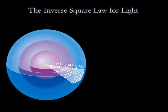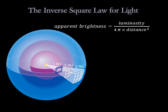Now consider this figure. The same total amount of light must pass through each imaginary sphere surrounding the star. The amount of light passing through the small square on the sphere located at 1 AU is the same amount of light that must pass through 4 squares of the same size on the sphere located at 2 AU. Each square on the sphere at 2 AU therefore receives only a quarter of the light compared to the square on the sphere at 1 AU. Similarly, the same amount of light must also pass through 9 squares on the sphere located at 3 AU. Each of those squares receives only 1/9 as much light as the square at 1 AU.